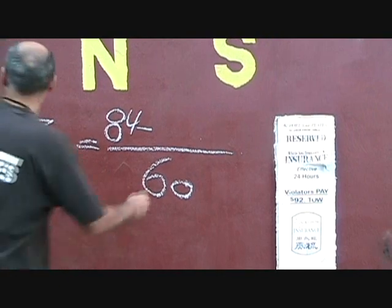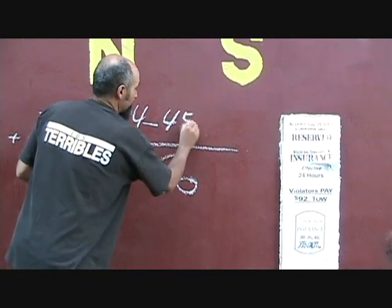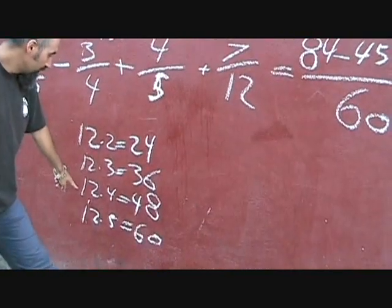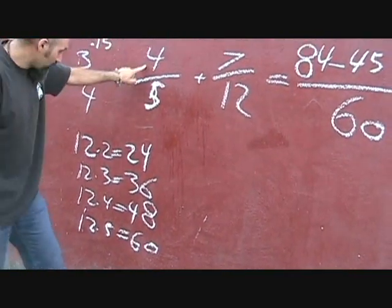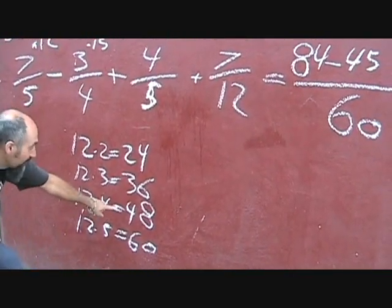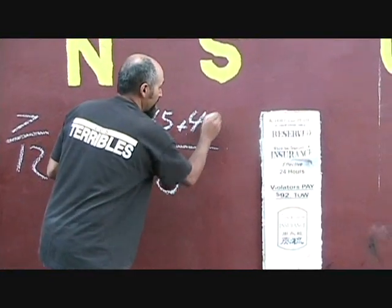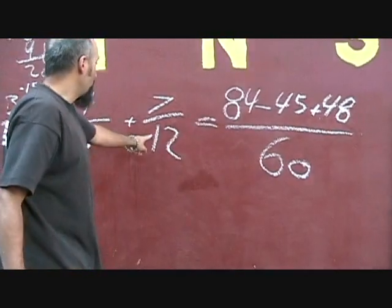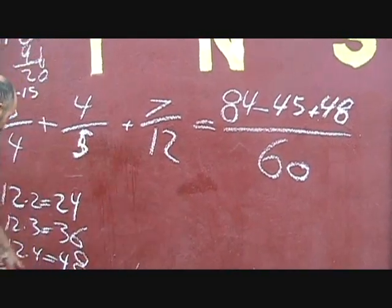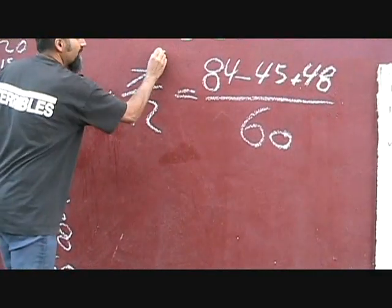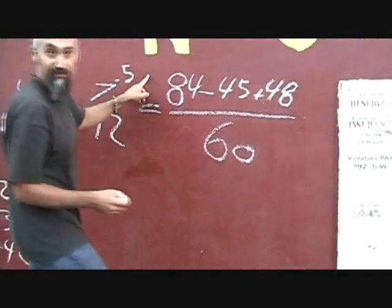So right now we've got 84 minus 45. We multiply 5 by 12, so 12 times 4, we already did it over here, it's 48. So it's plus 48, and we've got 12 here. We multiply 12 by 5 to give us 60, so we multiply 7 by 5 as well. 7 times 5 is 35.